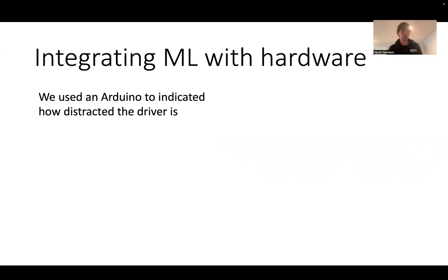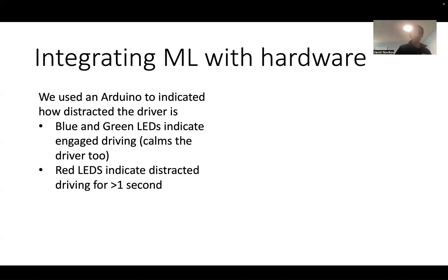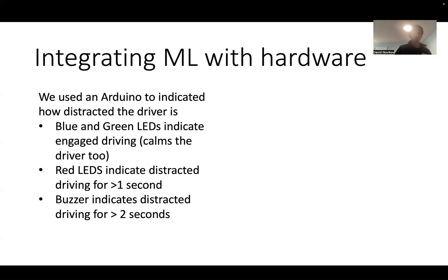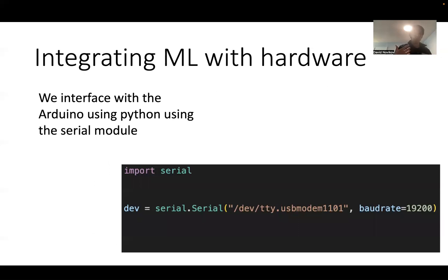We used Arduino as the interface with Python. We built a circuit where the blue and green LEDs indicate good driving and also calm the driver in terms of LED color. Red indicates distracted driving for more than one second. The buzzer goes off after two seconds of distracted driving, and after three seconds, the motor turns on causing a vibration.